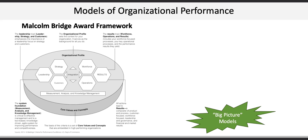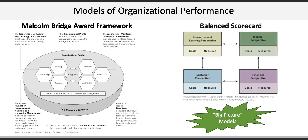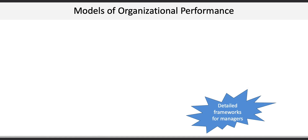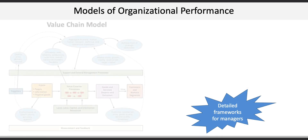The second big-picture model is the balanced scorecard, which looks at organizational performance across four perspectives: financial, customer, internal, and innovation and learning. The last two models of organizational performance are more detailed frameworks for operations managers.